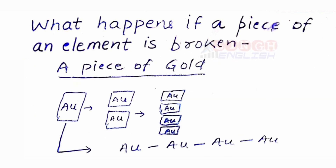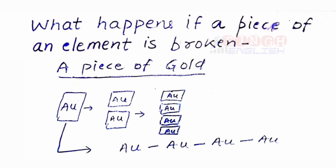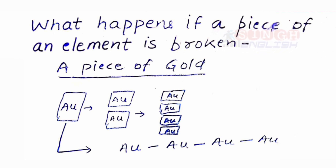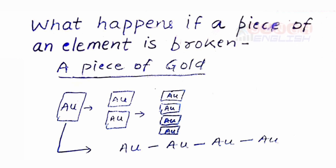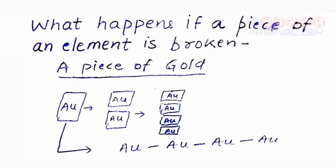Another example is a gold piece. Same here — after breaking, it doesn't lose its property. These two examples prove that an element is made up of only one kind of atoms.